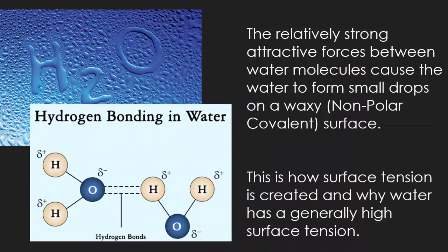The relatively strong attractive forces between water molecules cause water to form small droplets on waxy or nonpolar surfaces. This is how surface tension is created and why water has a generally high surface tension. Water is attracted to oxygen, a very electronegative element inside its own molecules, so it clings and clumps together. That's why condensation on a window doesn't immediately evaporate. If you spill acetone on your hand, because there are no hydrogen bonds in acetone, it immediately goes from liquid to gas. But because hydrogen bonds occur in water, the liquid remains a liquid much longer before turning into a gas.